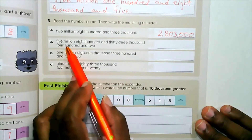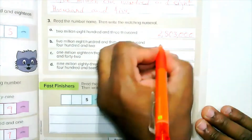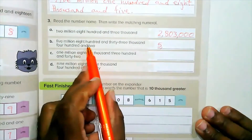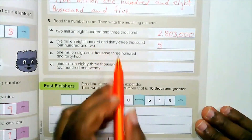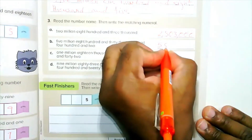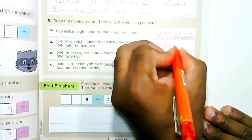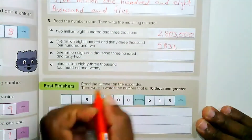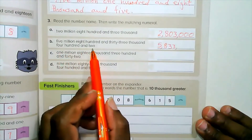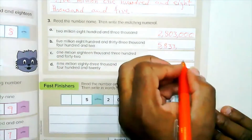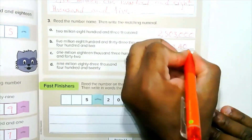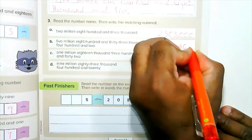Part B: 5,000,000. So write 5,000,000. Then 833,000. Then 402: we have 400, no 10s, so write zero and two.